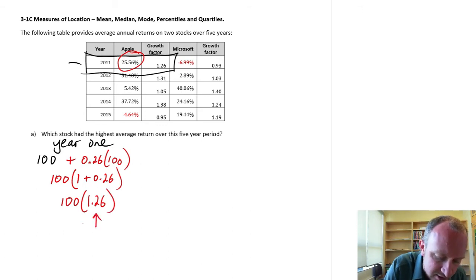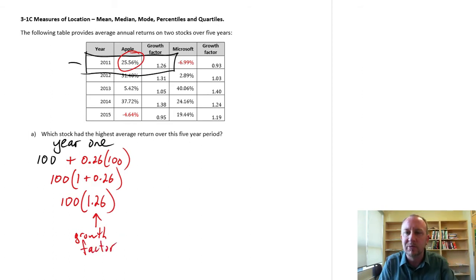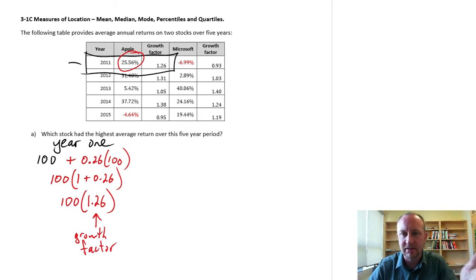Now before I really do the math and add this together, let's just rewrite this and factor out the 100. So this becomes 100 times then 1 plus 0.26. And if I just pull this together, this becomes 100 times 1.26. So right here, 1.26, this is the growth factor. This is the number that I multiply it with the initial value, and it tells me what its value is at the end of that period. In this case, 1 year.